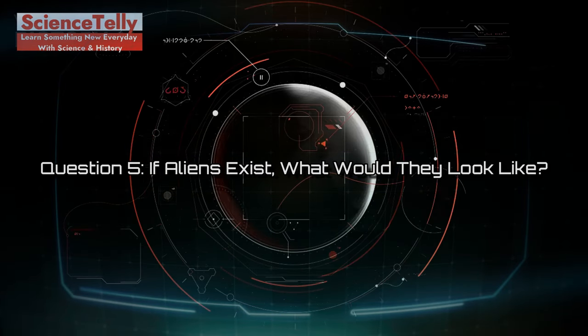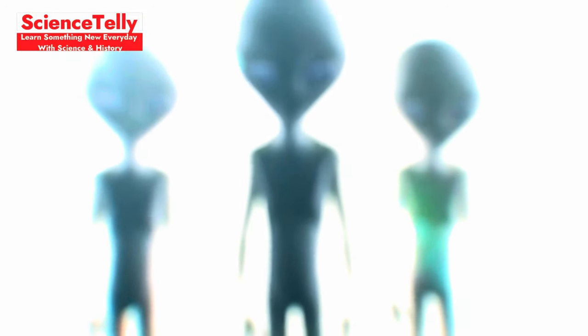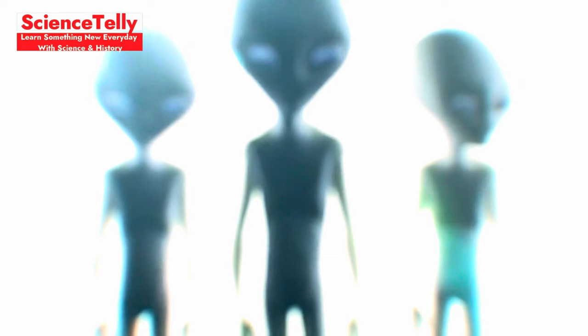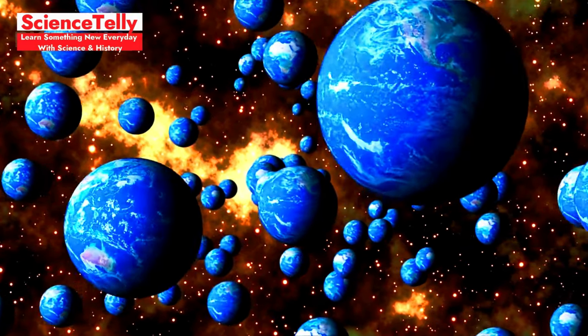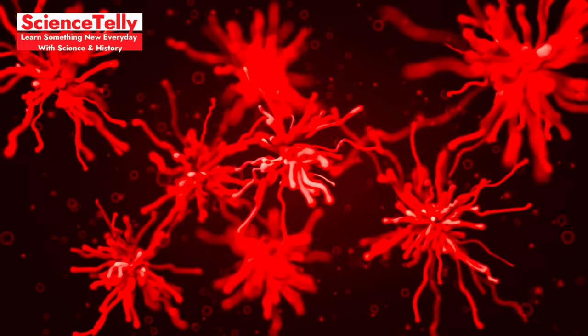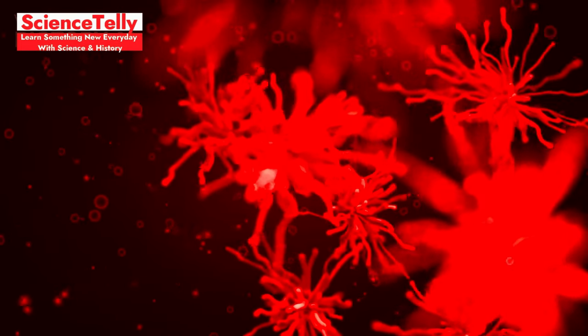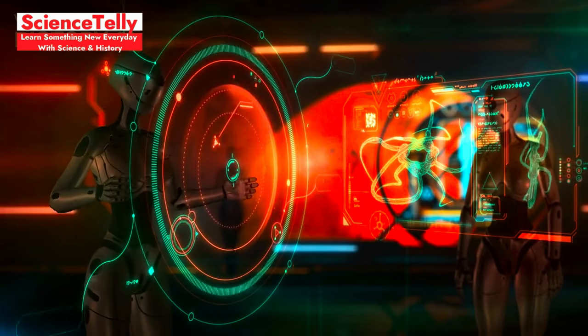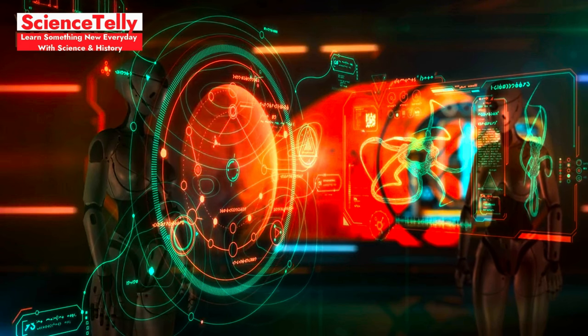Question 5. If aliens exist, what would they look like? Let's dive into an out-of-this-world question. With billions of planets out there, many scientists think there's a chance life could exist elsewhere in the universe. Some believe that alien life might be very simple, tiny microbes or bacteria, for example.